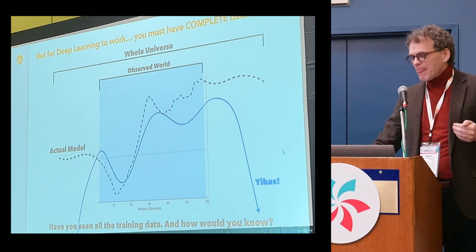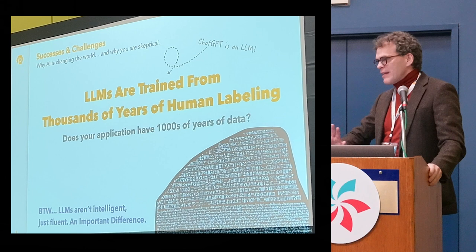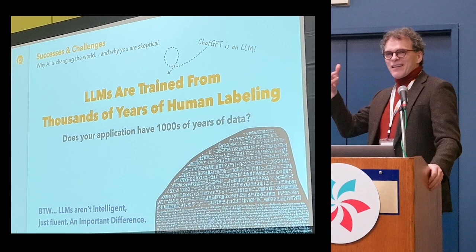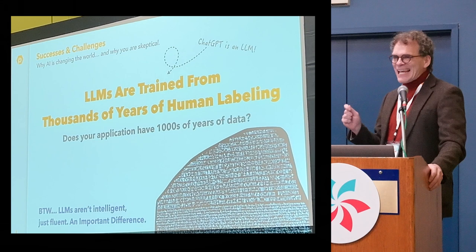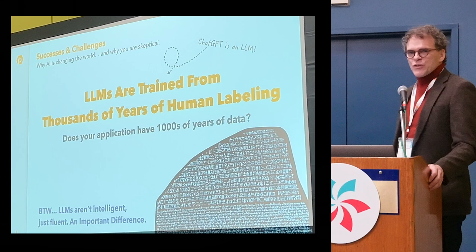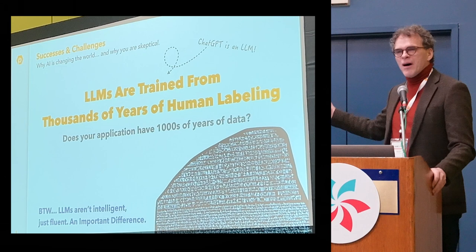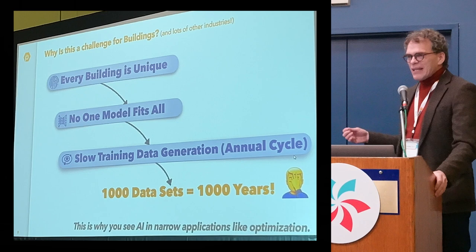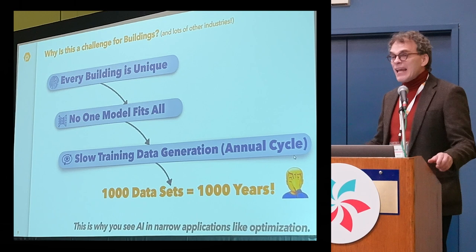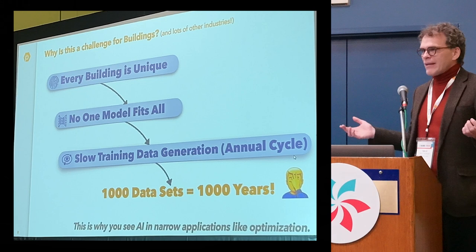Why are LLMs very successful? LLMs have been in development for a decade — they've entered the cultural parlance just in the last year as they've become very accessible. They're successful because of data: humans have been labeling things for tens of thousands of years in all these different languages, and then we spent the last 30 years with billions of people putting all that language on the internet, and we can scrape the whole thing to train them. No other industry has that. Every building is unique, no one model will fit all, and it takes by definition one year to get a dataset. Getting a thousand datasets, which is still very slim, would take a thousand years.